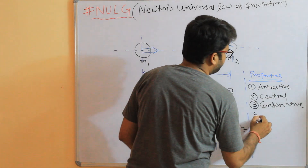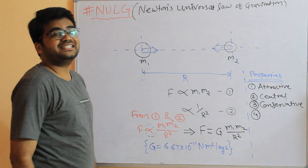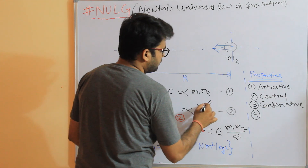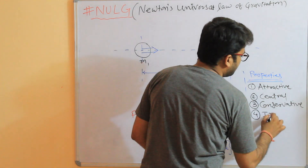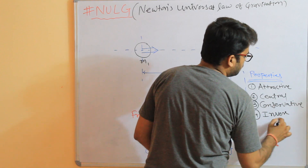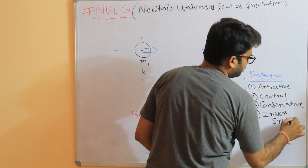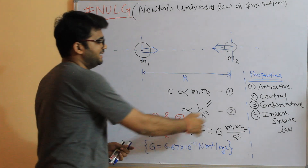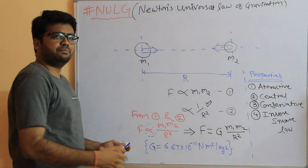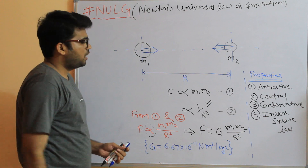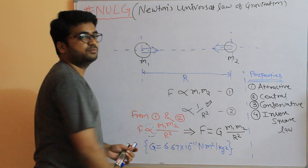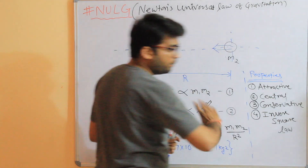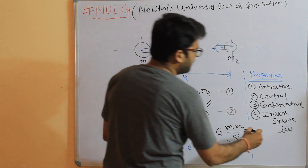Fourth property: it obeys the inverse square law. This is actually taken from Kepler's law. So the fourth property is that gravitational force obeys the inverse square law.